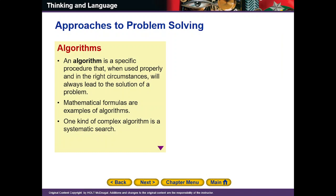پہلی approach ہے algorithm۔ Algorithm وہ method ہے جب ہمارے سامنے کوئی مسئلہ آتا ہے تو اس کا جو right solution ہوتا ہے، وہی process استعمال کی جاتی ہے — اس کو algorithm کہتے ہیں۔ Algorithm کا solution تقریباً اکثر صحیح ہوتا ہے۔ اس کی مثال mathematical formulas ہے — اگر کوئی سوال ایک formula پہ given ہو اور ہم وہ formula apply کریں تو جواب صحیح آتا ہے۔ تو algorithm کو ہم وہاں استعمال کرتے ہیں۔